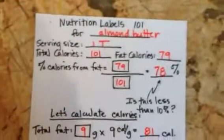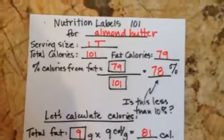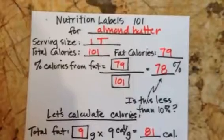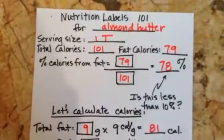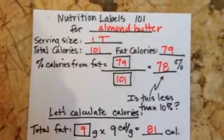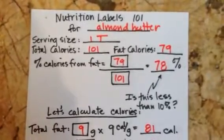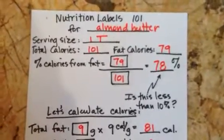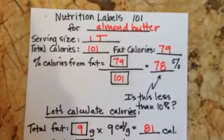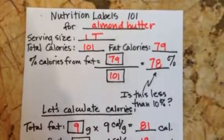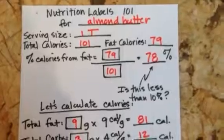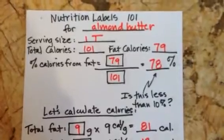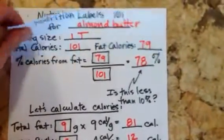Almond butter — we all love it. But all nut butters are obviously going to be high in fat. Be really careful when looking at labels of any processed nut butters because a lot of companies will add oil to it. This is just a tablespoon of fresh almond butter with no oils added — 78% fat. So next time you make almond butter toast, just do a little bit and get the taste of it. Try to minimize your almond butters as well.